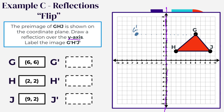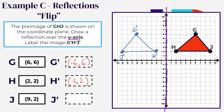For H, which is 2 spaces from the axis, we go the other direction 2 spaces and label it H prime. For J, which is 9 spaces from the axis, we count 9 spaces in the opposite direction and label it J prime. Connect the dots to form the reflected triangle — same shape and same size, so reflection produces congruent triangles. G prime is at (-6, 6), H prime is at (-2, 2), and J prime is at (-9, 2).